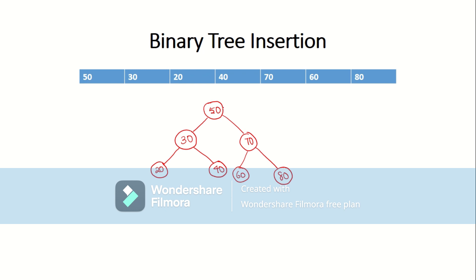What are the characteristics of a node? A node will have a key. You have a key value inside the node, and every node will have a left child and a right child. So the properties a node will have are: a key, a left child, and a right child. To declare that, we will create a class called Node.